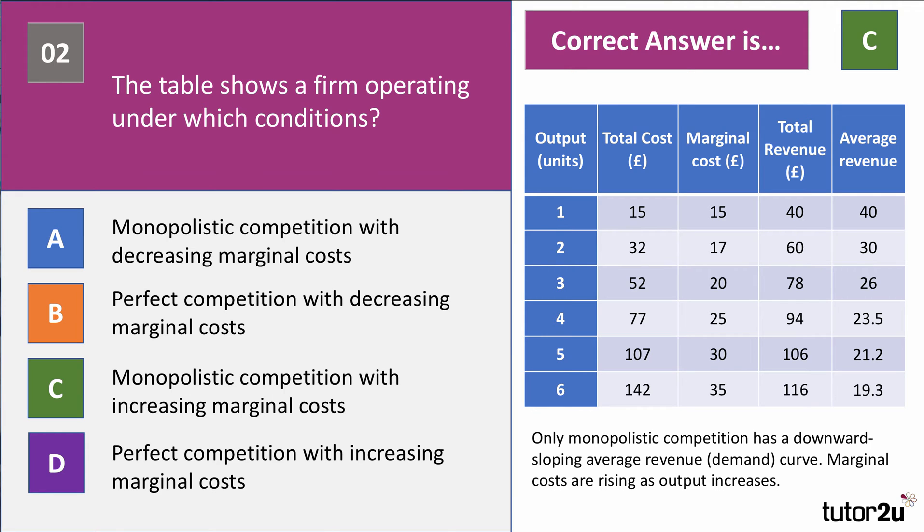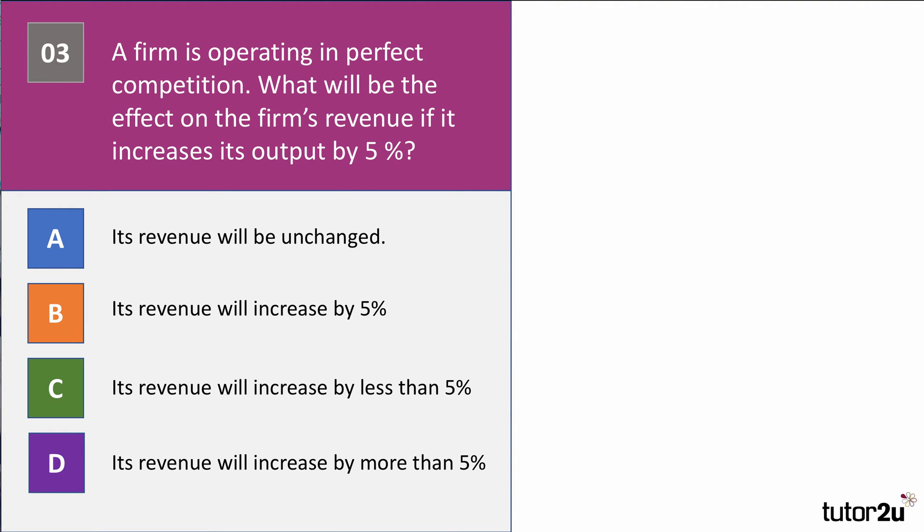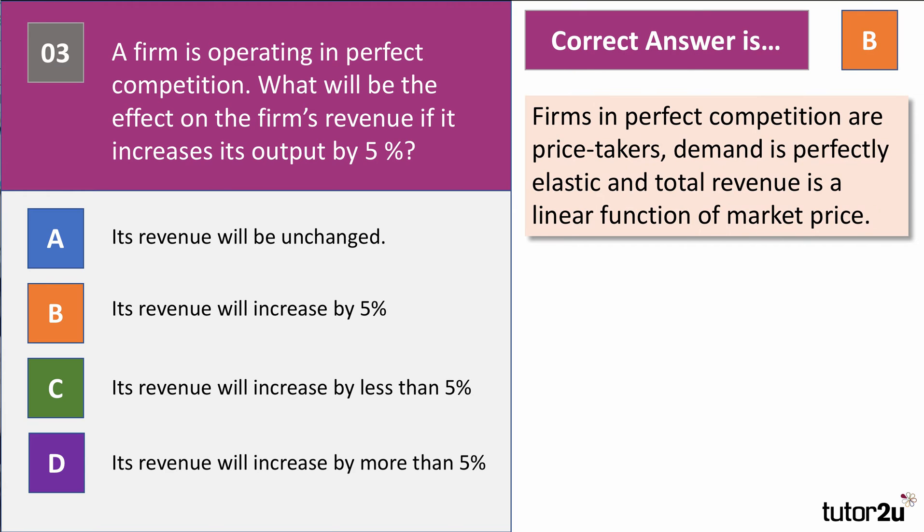Question three: a firm is operating in perfect competition. What will be the effect on the firm's revenue if it increases its output by 5%? The answer is B — it will rise by 5%. Firms in perfect competition face a perfectly elastic demand curve; they are price takers. Therefore every unit of output can be sold at the same price, and total revenue is a linear function of the market price.